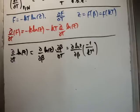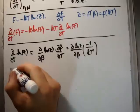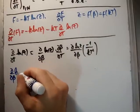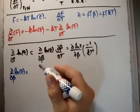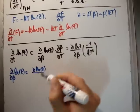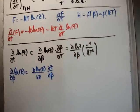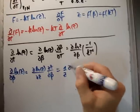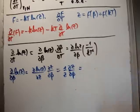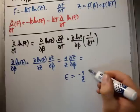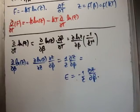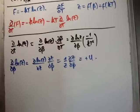Now, getting del del beta of the natural logarithm of Z doesn't seem helpful at first. But applying the chain rule again, del del beta of log Z equals del log Z del Z times del Z del beta, which gives 1 over Z times del Z del beta. Going back to our previous result, the energy equals minus 1 over Z times del Z del beta. So in actual fact, del del beta of log Z equals minus the energy U. It turns out this was quite helpful.